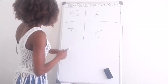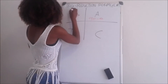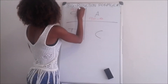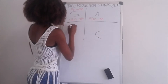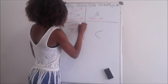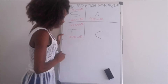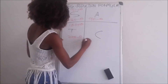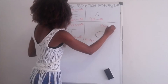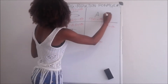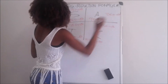In the first quadrant we have 90 minus theta. In the second quadrant we have 90 plus theta and also 180 minus theta. In the third quadrant we have 180 plus theta and also 270 minus theta. In the fourth quadrant we have 270 plus theta and 360 minus theta. In the first quadrant we also have 360 plus theta.